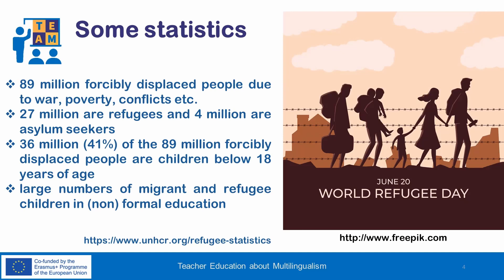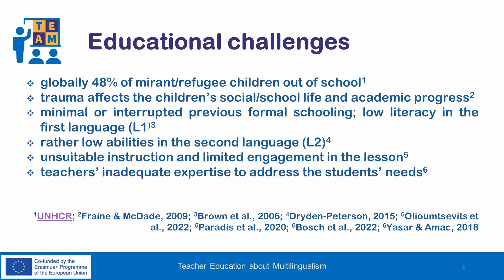Firstly, almost half of the migrant and refugee children are out of school, while trauma affects the children's social and school life and also their academic progress. Additionally, many migrant and refugee children have minimal or interrupted previous formal schooling and thus their literacy in the first language may be low. Due to their living conditions, among other things, their abilities in the second language may also be low. Moreover, the teachers do not always have adequate training to address the students' needs and to engage them in the lesson.